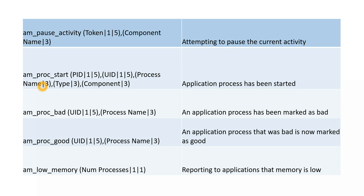We can exactly come to know which app is killed or which app is started. `am_proc_bad` — application process has been marked as bad. `am_proc_good` — an application process that was bad is now marked as good. `am_low_memory` — whenever the device runs into a low memory condition, this log is logged in the event log, reporting to applications that memory is low. When we have issues and want to know if they are caused by low memory, this log message really helps. If we find this in event logs, it confirms our issue is due to low memory conditions.